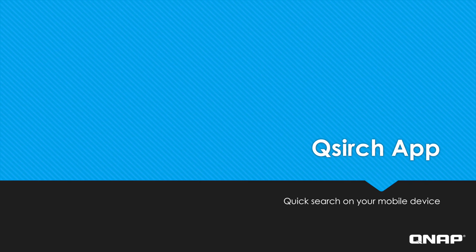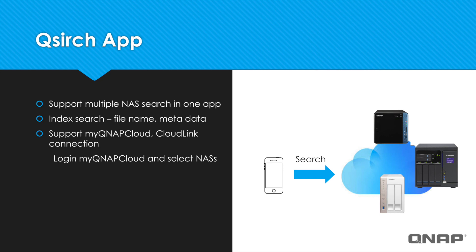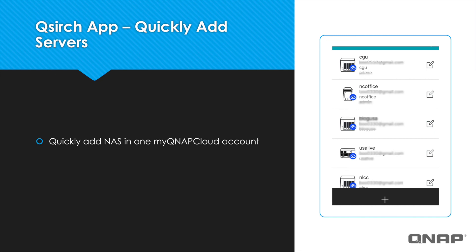We provide a powerful search engine called QSearch to help you quickly and easily locate your files. So even if you forget where you stored a file, finding what you need can be done in a matter of seconds. Now you can utilize this feature on your mobile device with our QSearch mobile app, which enables you to search the files of multiple NAS units right on your phone. You can search by file name or metadata, and find all of the registered NASes on your myQNAP cloud account.